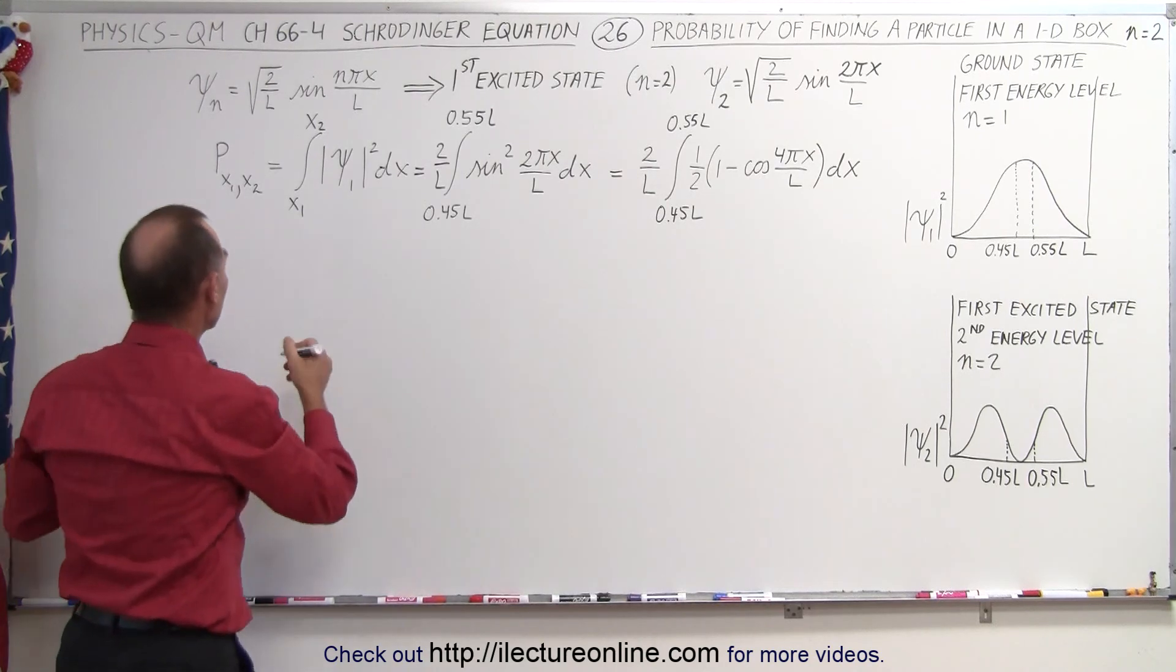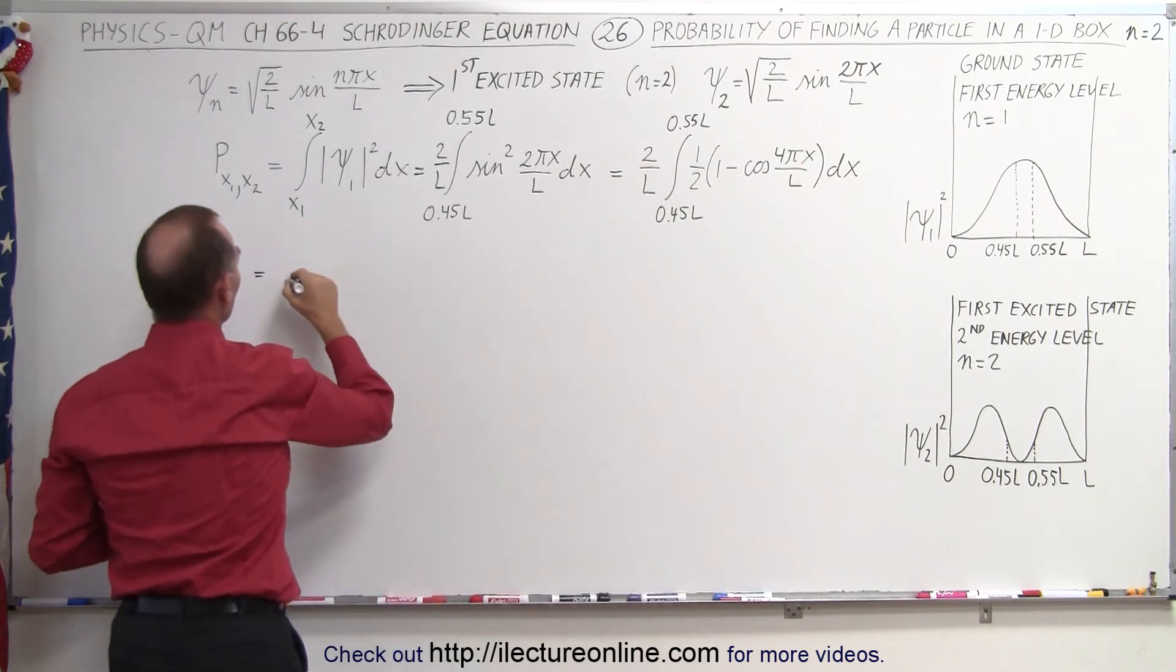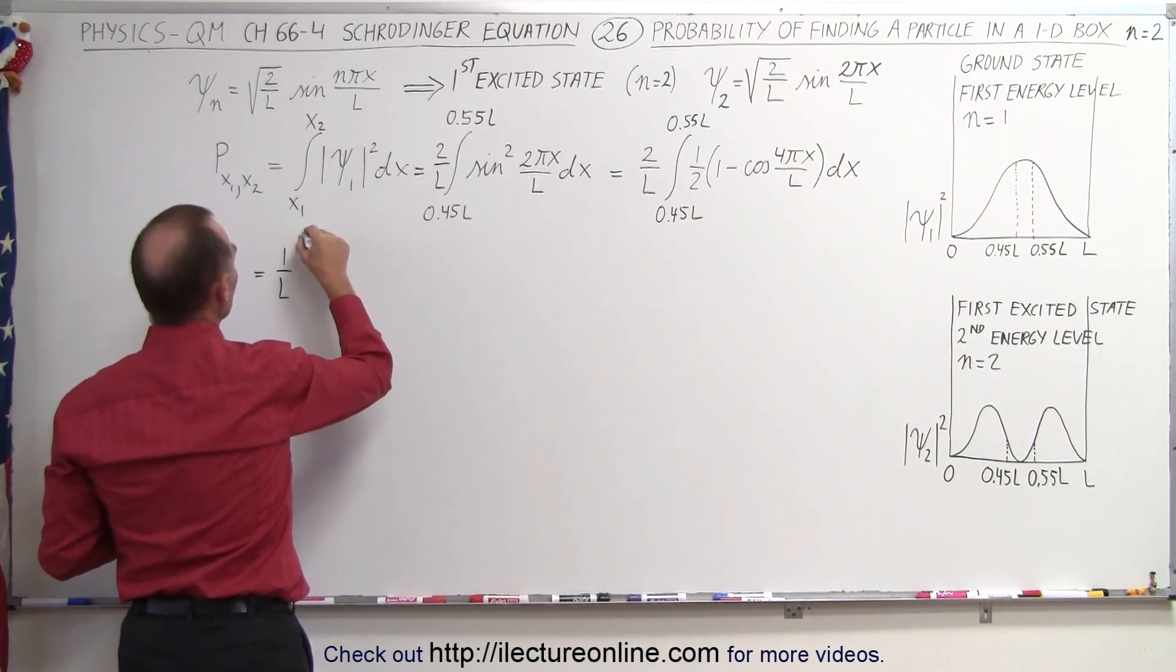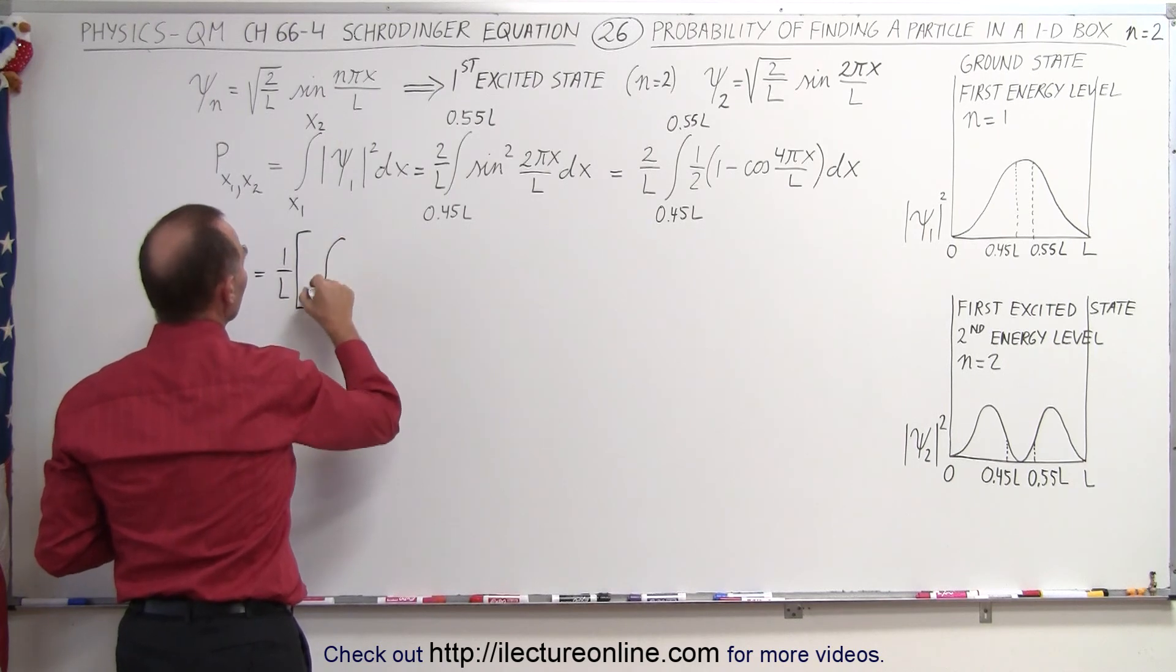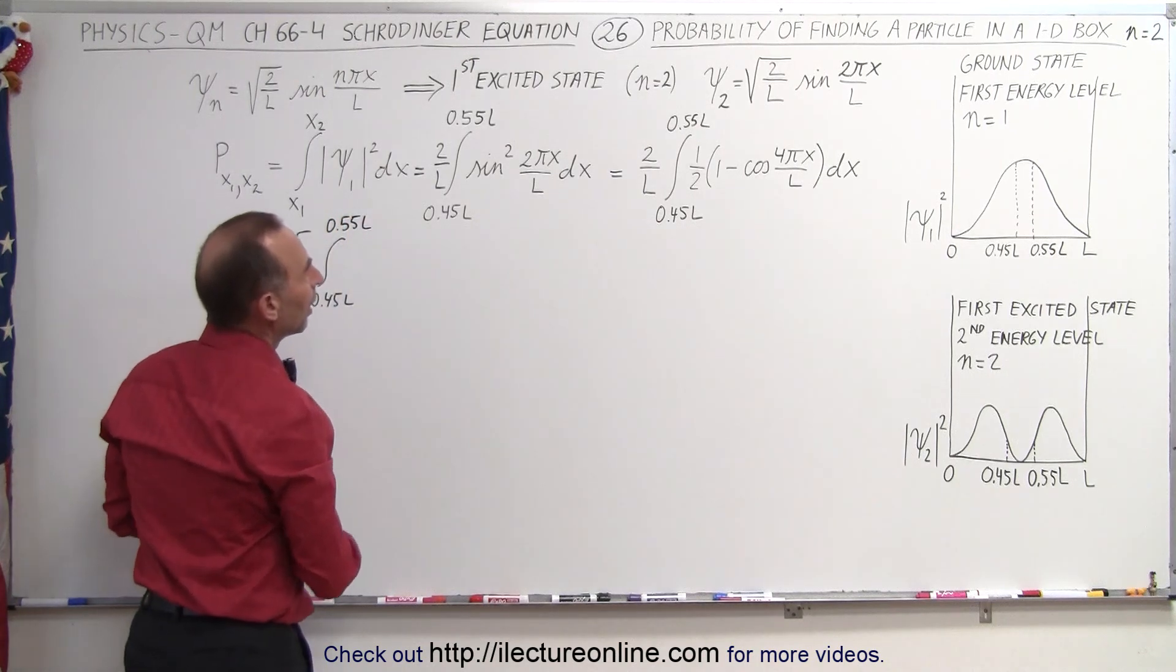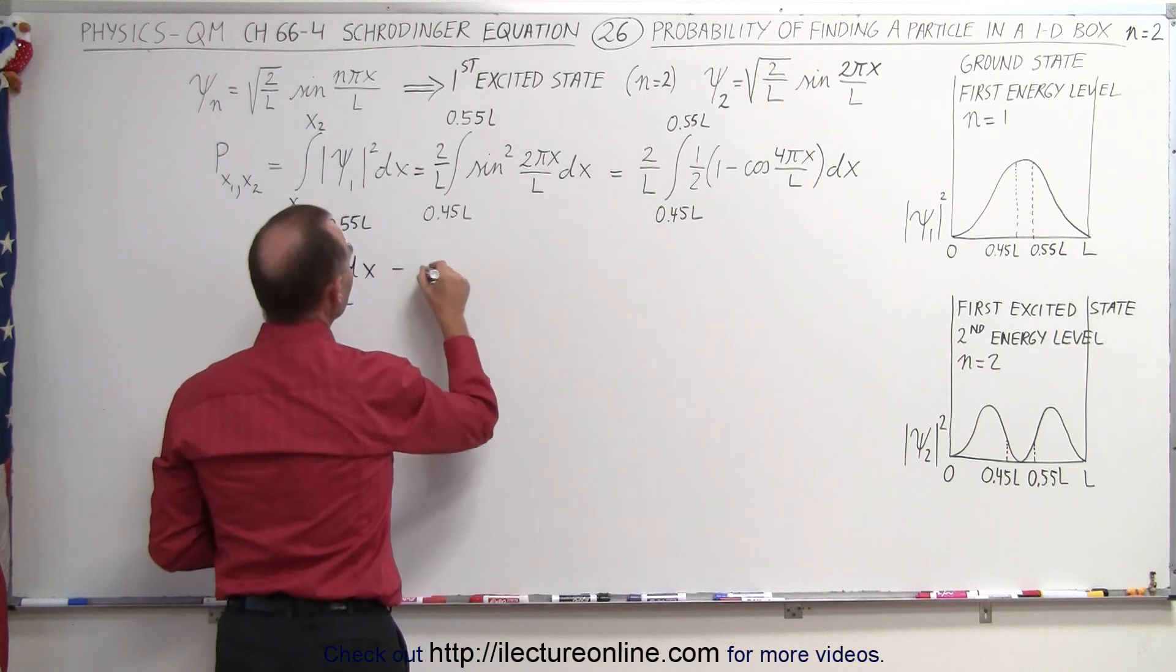So when we simplify that a little bit more this becomes equal to, notice that the two's cancel out. So it's one over L times and we can separate that into two separate integrals.